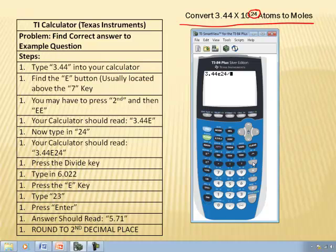Now I want to press the divide key because to go from atoms to moles, you must divide. So divide by Avogadro's number, which is 6.022, second E, 23. And that's what I have typed in my calculator. That's the language my calculator understands. Then I press enter.